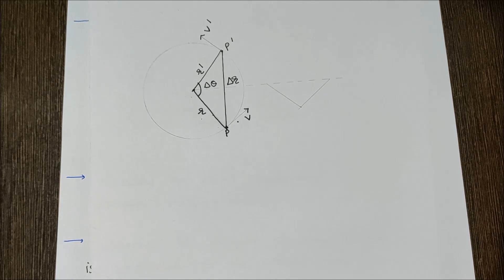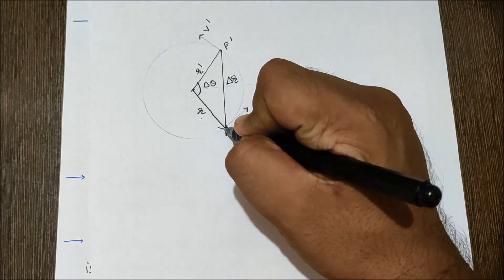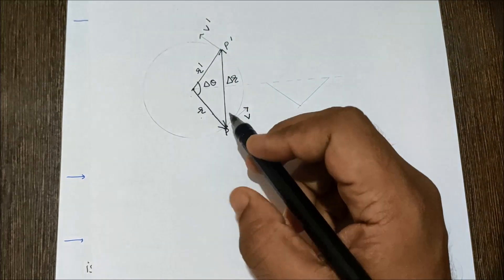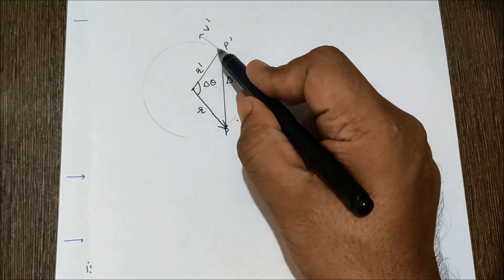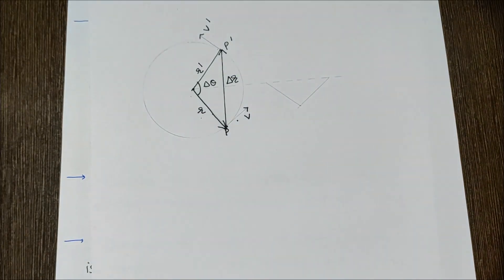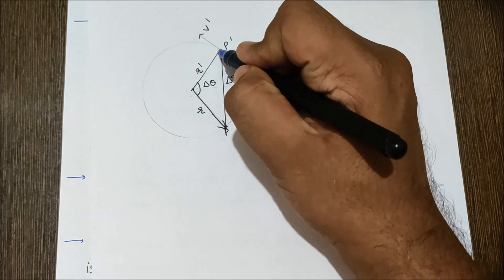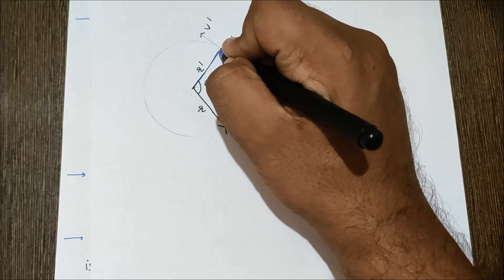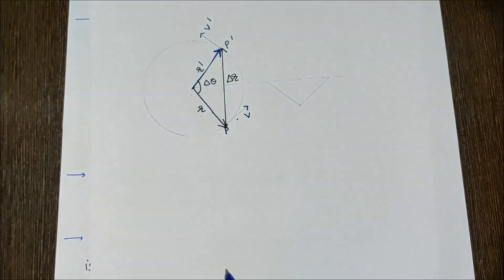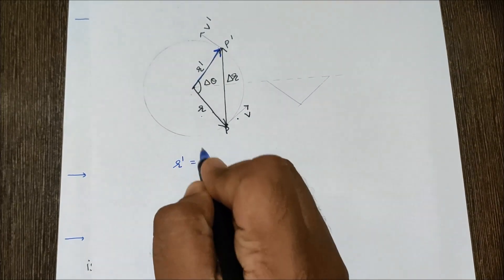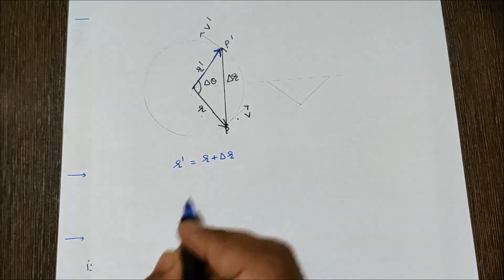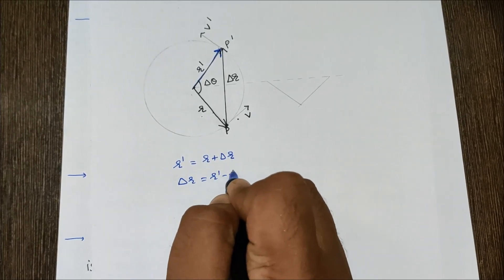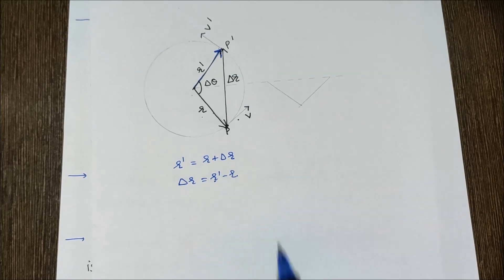The value of ΔR can be found using the triangle law of vector addition: if two vectors acting simultaneously on a body are represented in magnitude and direction by two sides of a triangle taken in order, then the resultant is given by the third side taken in opposite order. So R' = R + ΔR, therefore ΔR = R' − R, which is the final position vector minus the initial position vector.